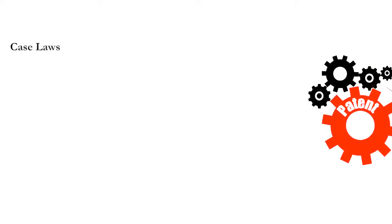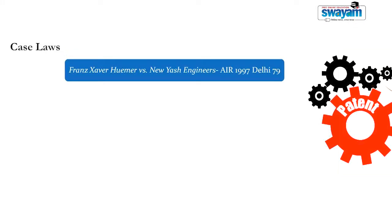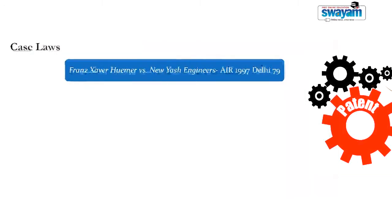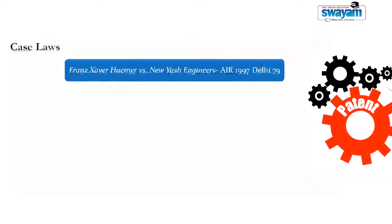This aspect has been interpreted by the Division Bench of the Delhi High Court — way back in 1996 in the case of Franz Evo Hummer versus Newyash Engineers — where it was sought to be argued by the defendants that it is permissible for them to go beyond the grounds of section 64 when a defense is raised under section 107. Interpreting both provisions, the court arrived at the conclusion that since section 107 incorporates section 64 by reference, the grounds of section 64 circumscribe the defenses available under section 107.